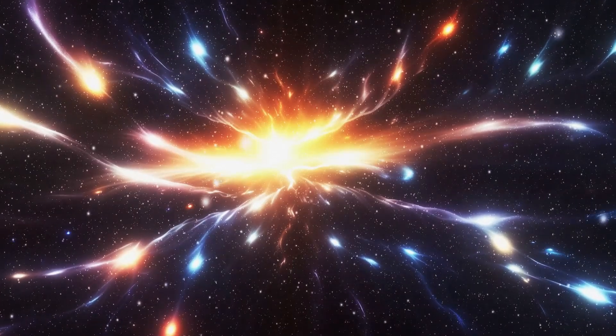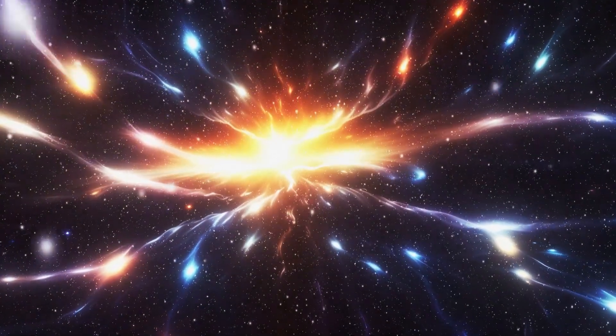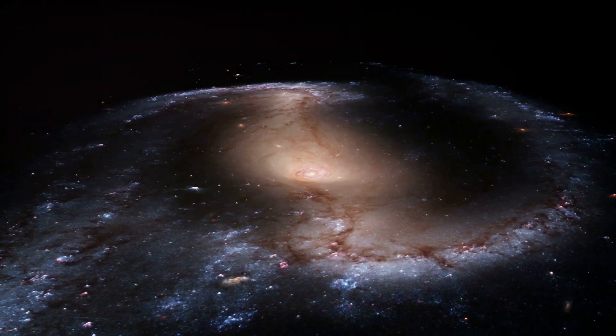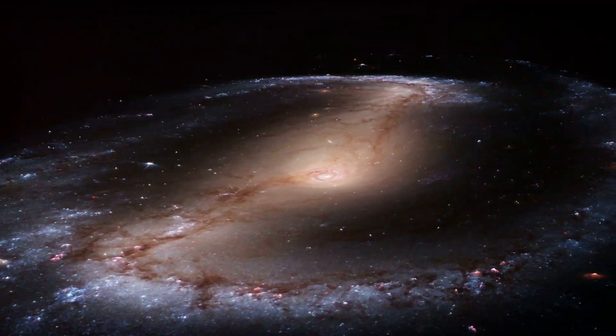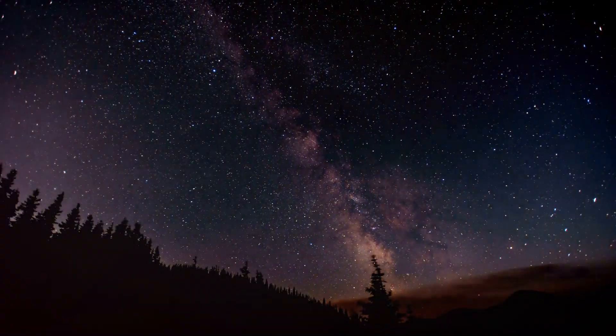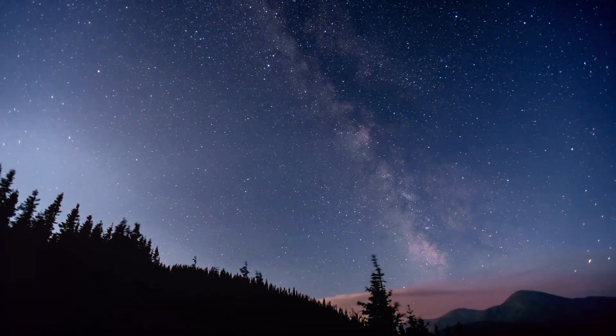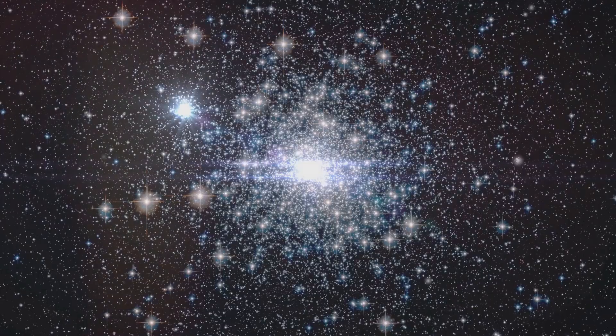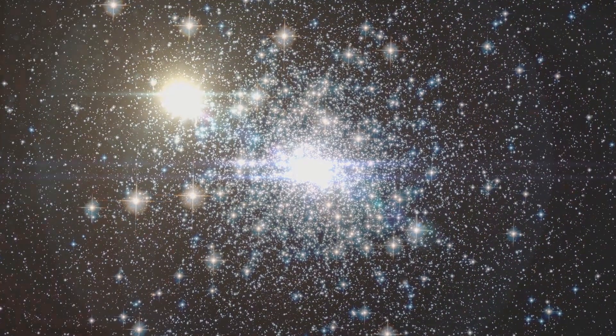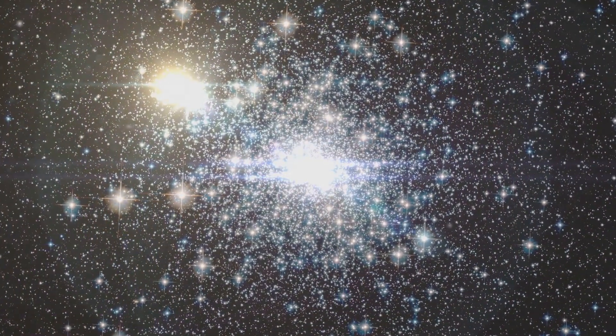One of the primary factors contributing to the Milky Way's stability is dark matter. This mysterious substance makes up about 85% of the universe's mass and surrounds the galaxy in a massive halo. The Milky Way is a dynamic system with billions of stars, all exerting their own gravitational forces. This creates a delicate balance that allows the galaxy to maintain its shape over billions of years.